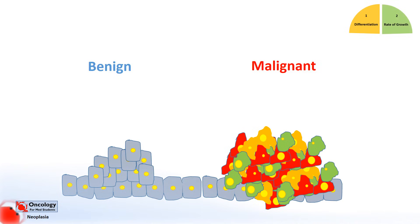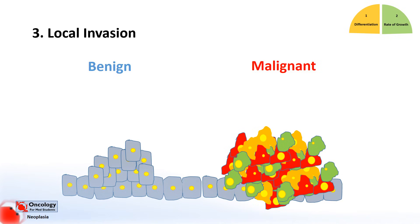Next are the issues that really do separate benign and malignant tumors, the first being local invasion. Benign tumors do not invade the tissues surrounding them — they often have a fibrous capsule that keeps the tumor as a single, clearly defined mass. This also makes them easy to remove if necessary, and they don't grow back when removed.